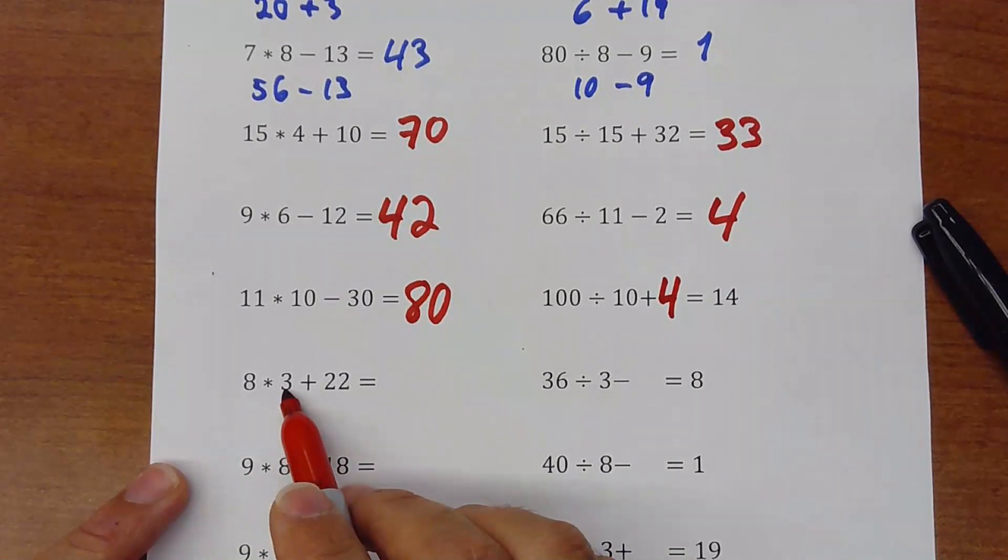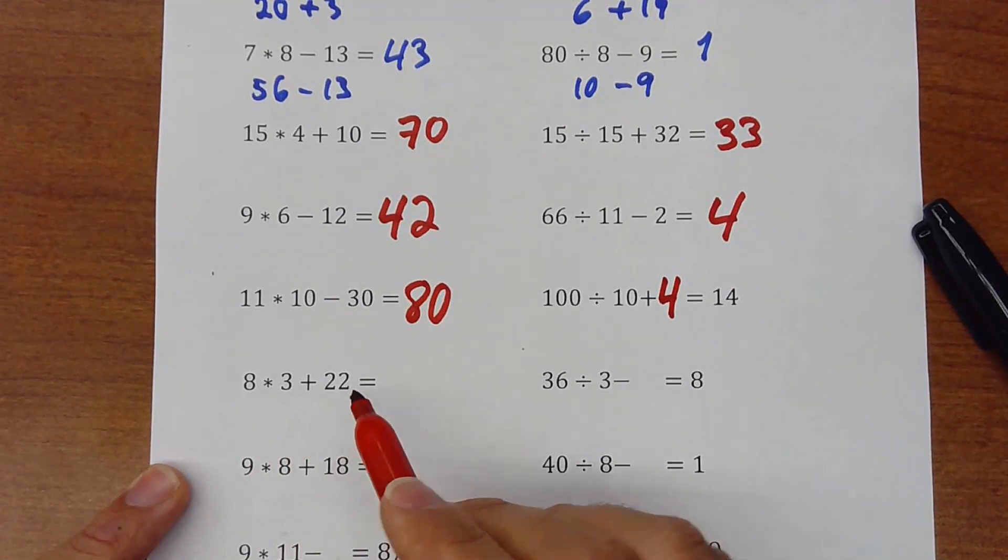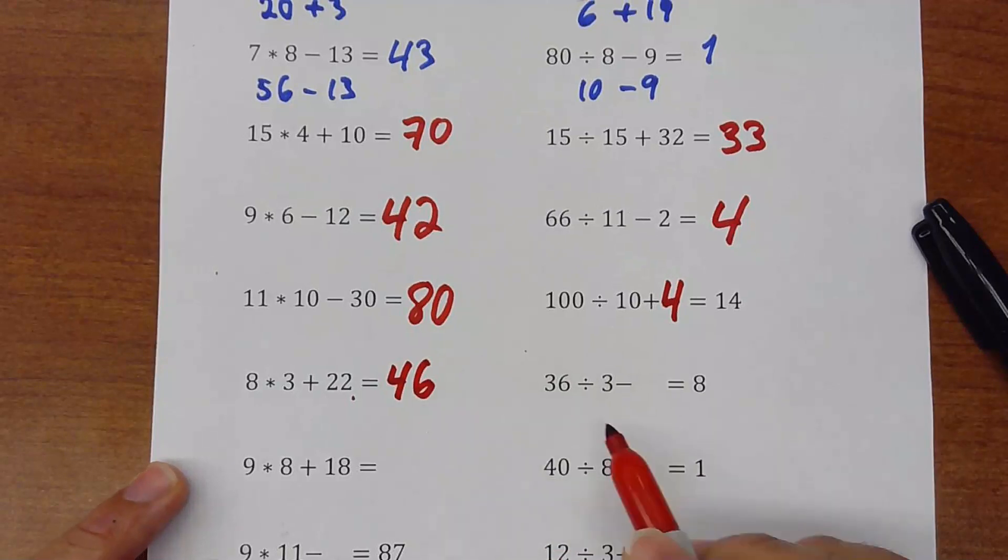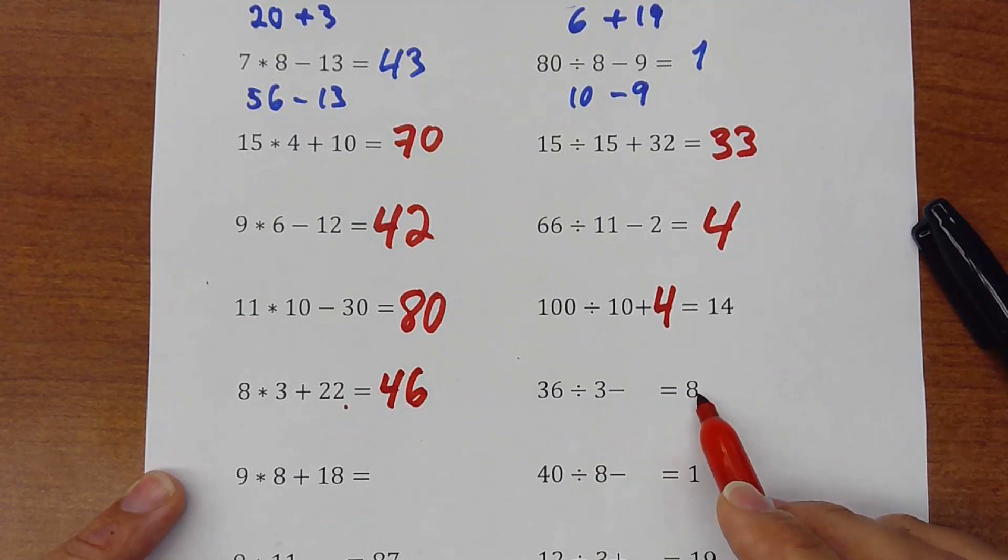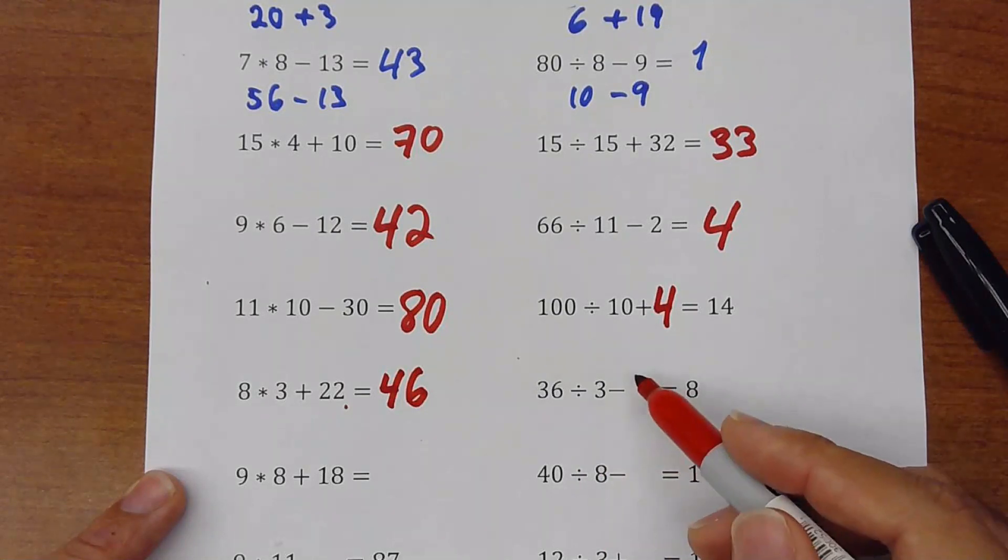8 times 3 is 24, plus 22 is 46. Then we have here, 36 divided by 6 is 12 minus something is 8. So the number here will be 4 again.